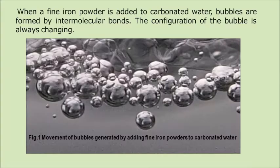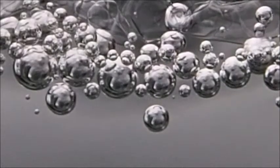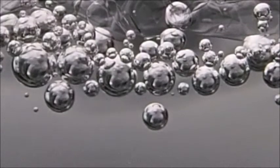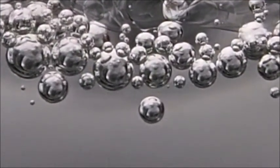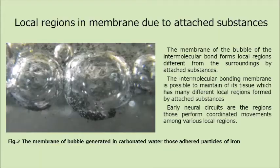When a fine iron powder is added to carbonated water, bubbles are formed by intermolecular bonds. The configuration of the bubble is always changing. The membrane of the bubble of the intermolecular bond forms local regions different from the surroundings by attached substances. The intermolecular bonding membrane is able to maintain its tissue, which has many different local regions formed by attached substances.